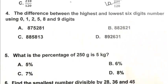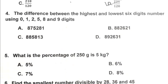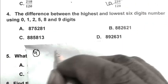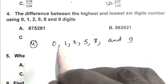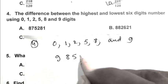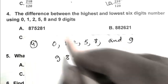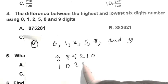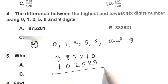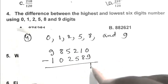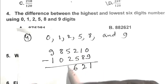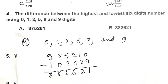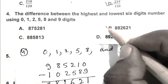Question number 4: The difference between the highest and lowest six-digit number using digits 0, 1, 2, 5, 8, and 9. The highest six-digit number is 985210 and the lowest six-digit number is 102589. Subtracting, we get 882,621. So B is the right answer.